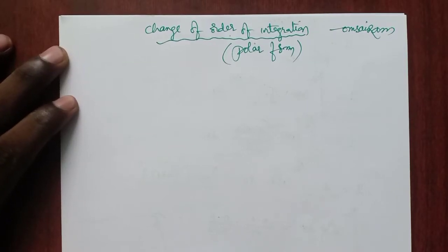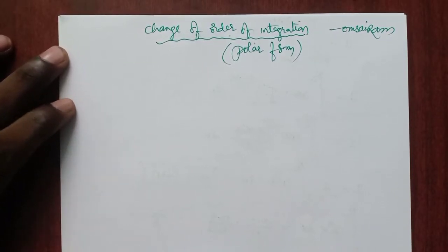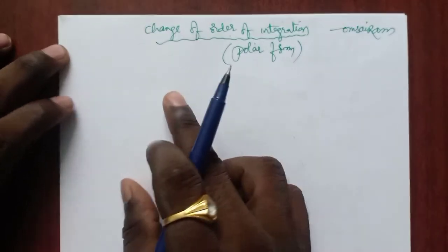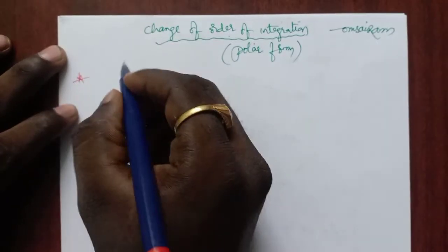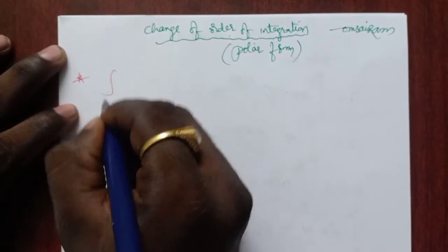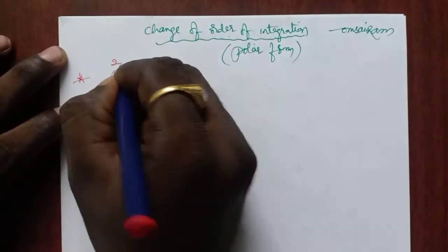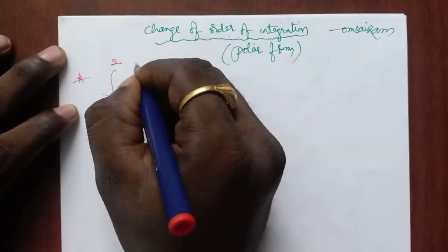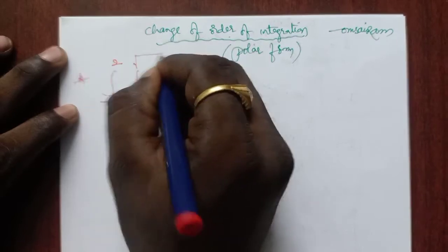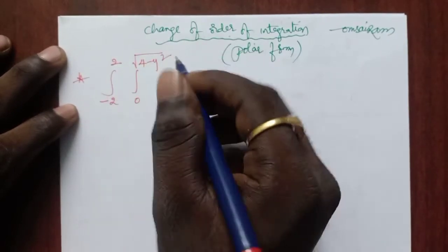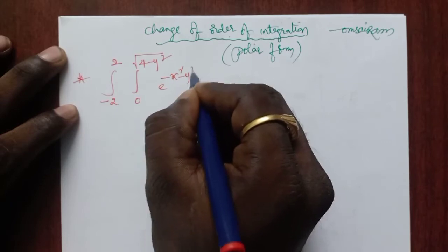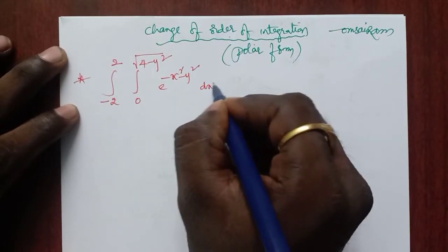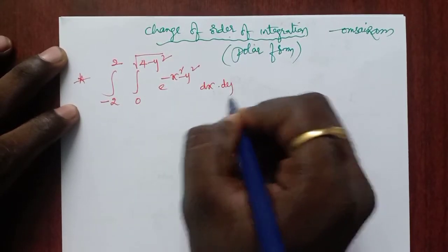Hi students. Today we will discuss one important problem on change of order of integration in polar form. The integral is: integration from minus 2 to 2, and from 0 to root over 4 minus y square, of e to the power minus x square minus y square, dx dy.